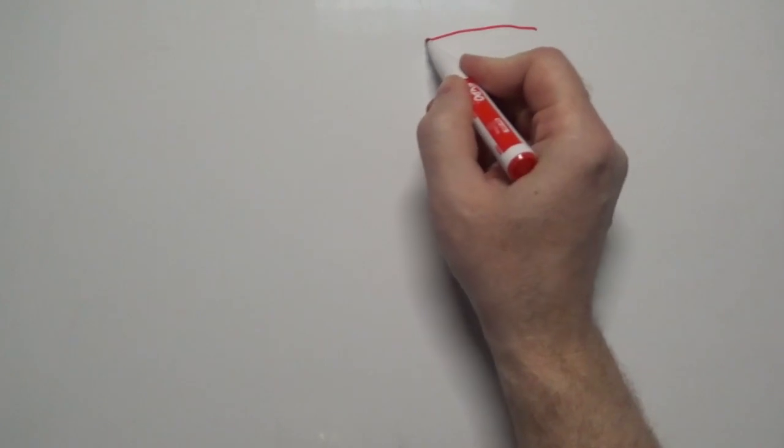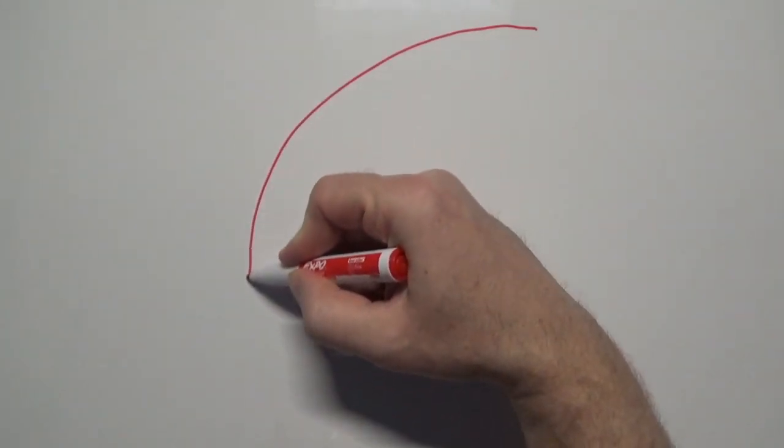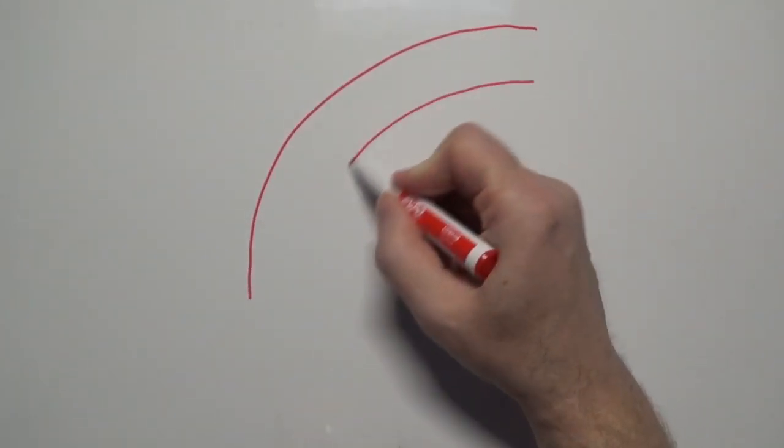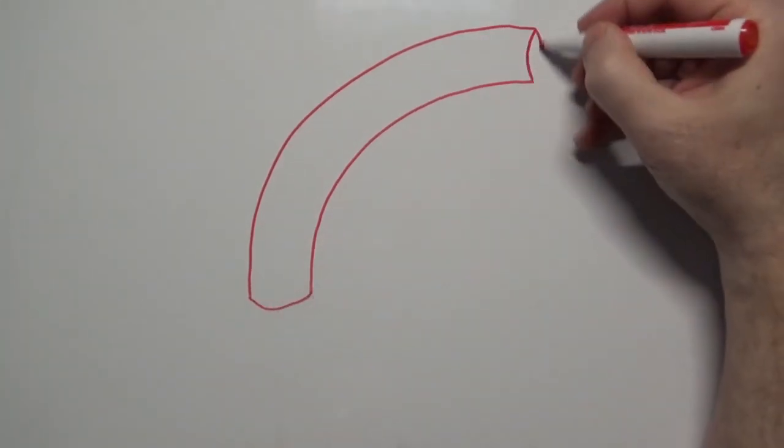First, we'll draw a curved tube to represent the axillary artery. Now this will be a right axillary artery, continuation of the right subclavian artery.